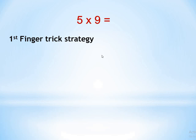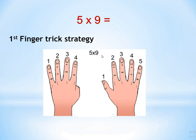In this strategy, you have to put your hands in front of you like this and start from the left. You will hide or fold the fifth finger. Here we have 5 times 9, so you will put down the fifth finger from the left: 1, 2, 3, 4, and 5 — put down the fifth finger.